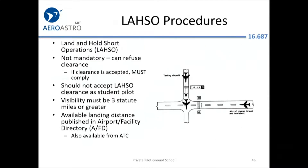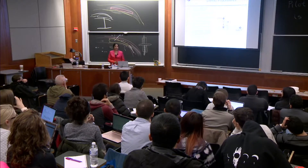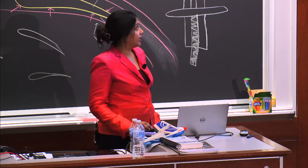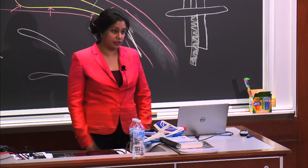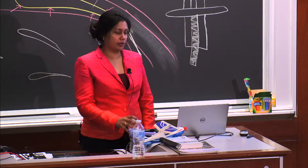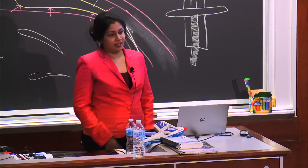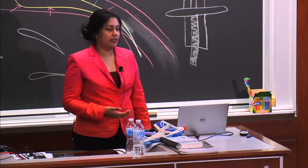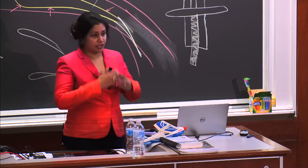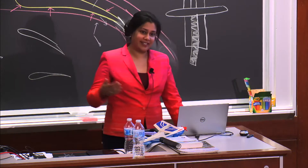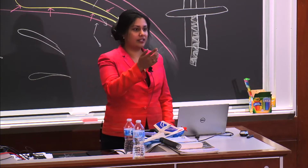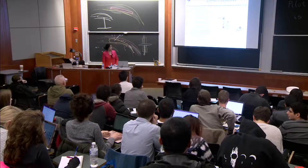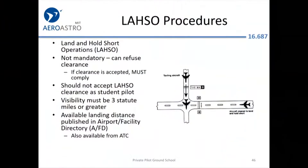Land and hold short: you can land, but don't cross the intersecting runway unless you're given permission. An air traffic controller might be very assertive about it. Regardless of how assertively they tell you, you're the pilot in command and you can say no — they have to deal with it. As a student pilot, you're actually not allowed to accept a land and hold short instruction. You may take more runway than you thought to land. You also need to have proper visibility to accept this type of restriction.